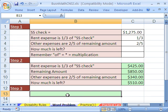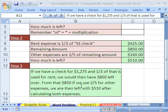Now, step three, write your answer in words. If we have, so there, I'm a very fast typer, there it is. If we have a check for 1,275 bucks, and one-third of it is used for rent, we would then have 850 bucks left over.